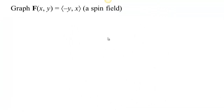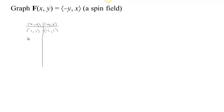Let's do another one. This vector field: the equation gives a recipe where if I start with two values x and y, the first term is the opposite of the y value and the second term is the x value. So if I start with (1, 1), I get out (-1, 1). If I start with (1, -1), I get out (1, 1). If I start with (-1, -1), I get out (1, -1). If I start with (-1, 1), I get out (-1, -1).